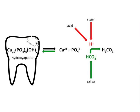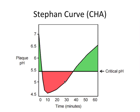Let's go back and revisit the Stephan curve. We talked about how it reaches a minimum within about 5 to 20 minutes of consuming sugar. But there's a more gradual recovery that we didn't talk about — it takes about 30 to 60 minutes for bicarbonate to buffer the pH back above the critical pH and restore the normal pH of the mouth.